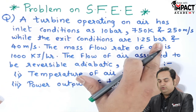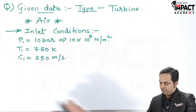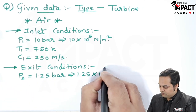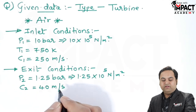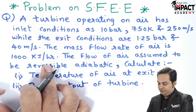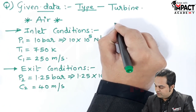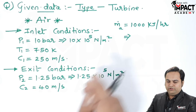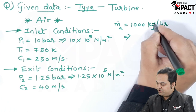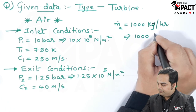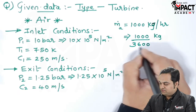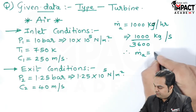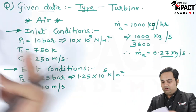The exit conditions are 1.25 bar exit pressure and 40 meter per second exit velocity. Next, it is given the mass flow rate of air is 1000 kg per hour. I will convert it into kg per second by dividing with 3600, because 1 hour has 3600 seconds. So the mass flow rate comes out to be 0.27 kg per second.